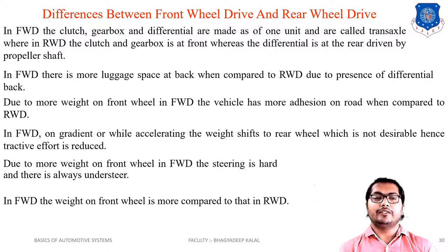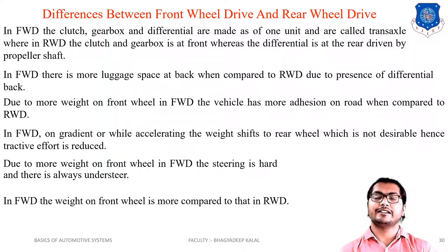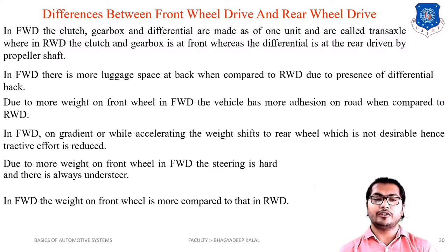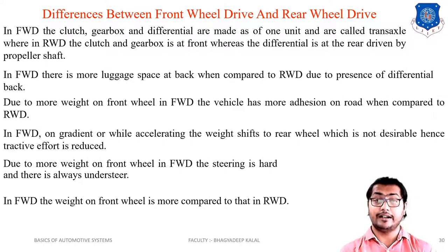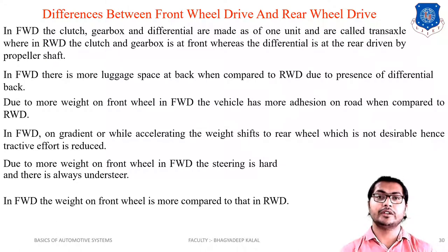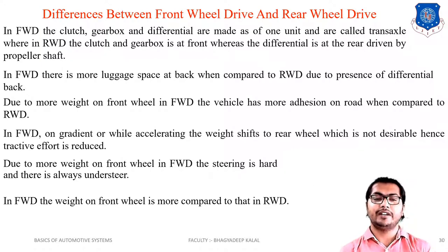In front-wheel drive, on a gradient or while accelerating, weight shifts to the rear wheel, which is not desirable, reducing tractive effort. Due to more weight on the front wheel in front-wheel drive, steering is harder because all mechanisms are mounted on the front axle. There is always under-steer tendency, meaning the turning achieved is less than intended. The weight on the front wheel is more in front-wheel drive compared to rear-wheel drive.